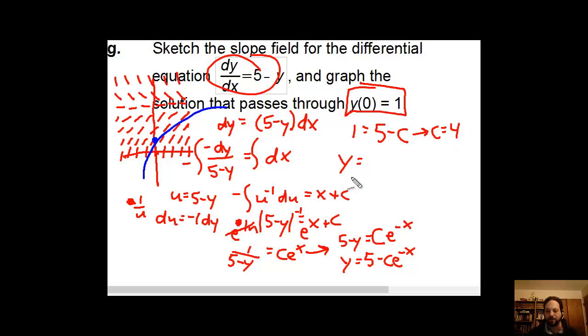So that makes me believe that my final equation here, and I challenge you to graph this using your calculator to verify that it's correct, is going to be y equals 5 minus 4e to the negative x. Graph it and see for yourself that that does represent this blue curve.